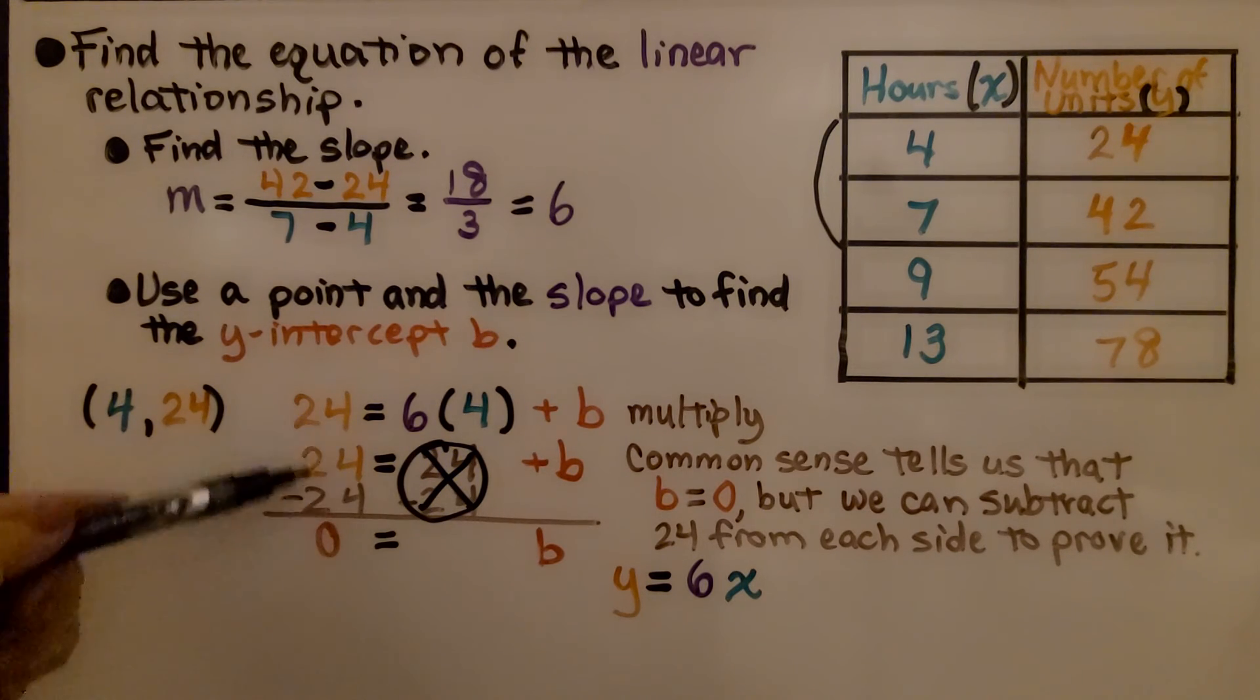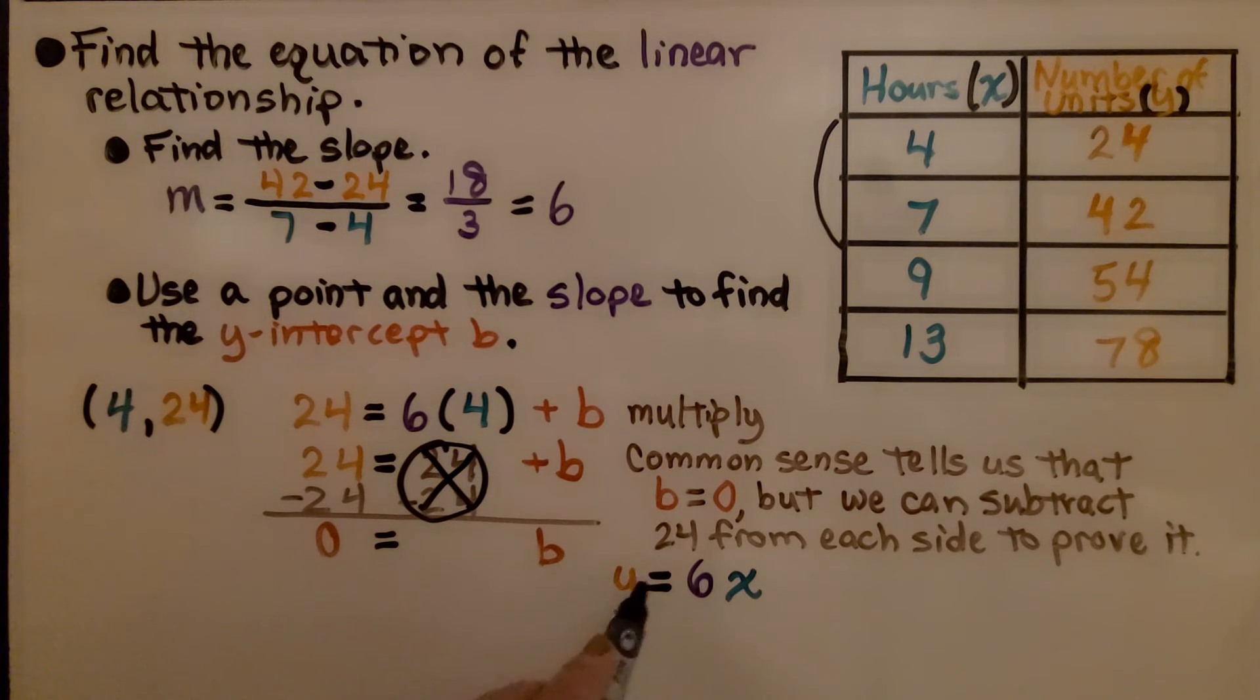And so do these, so we have 0 equals b. Our equation is y equals 6x, because we don't need to write plus 0. We could, but we don't need to.